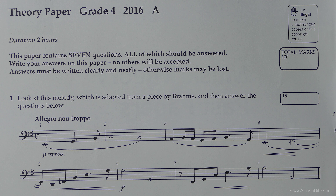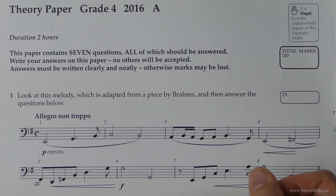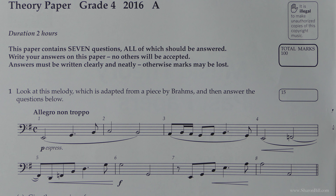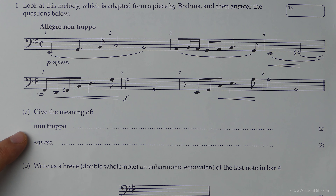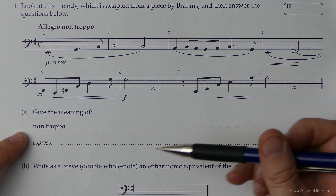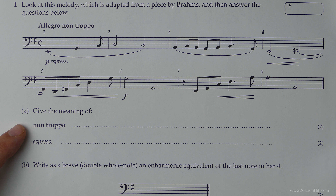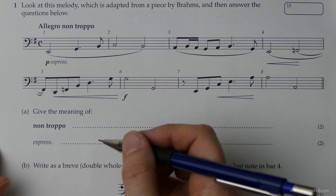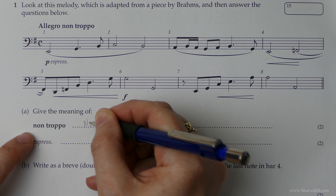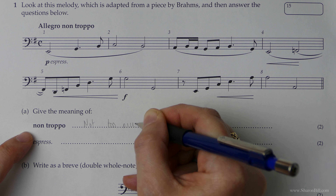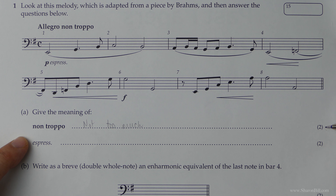Let's have a look at this first question. All of the questions on this first page relate to this little extract of music. We need to give the meaning of these Italian terms. Now in the 2018 onwards exams, these are presented in multiple choice, but it doesn't matter — we can still answer these questions. It's good revision, so we'll just crack on anyway. Non troppo means 'not too much' — 'non' is 'not' and 'troppo' is 'too much', so you need both of those aspects to get both points.